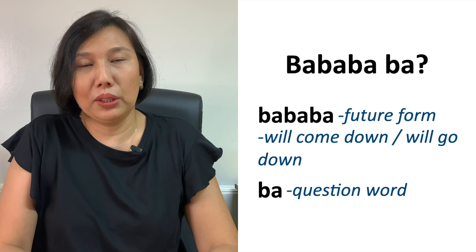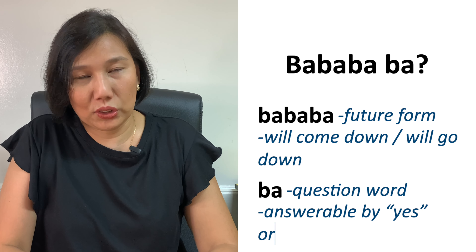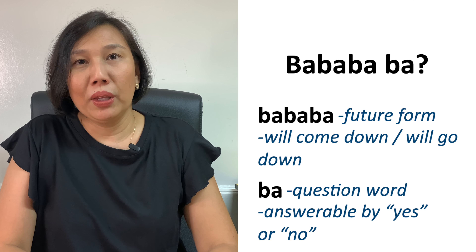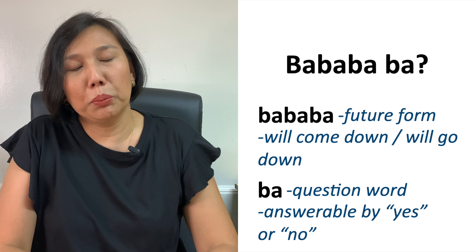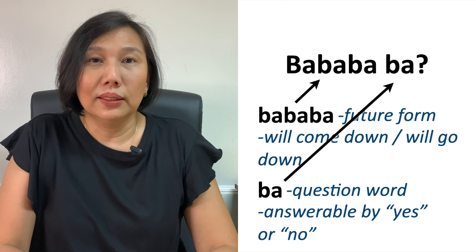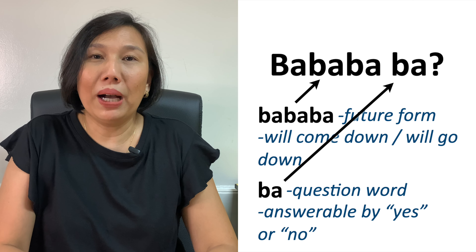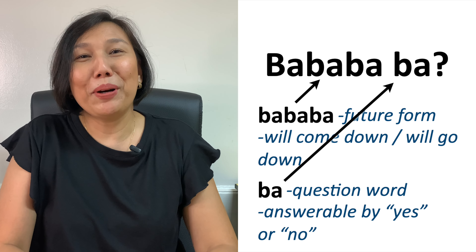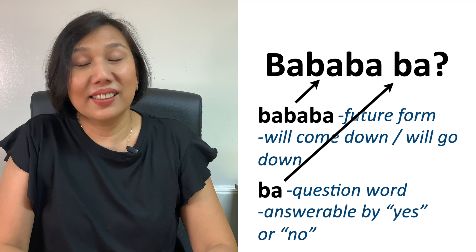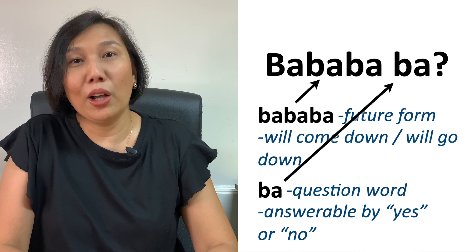Ba is a question particle — only one syllable — used to ask a question answerable by yes or no. Putting together the future form of baba, which is bababa, and the question particle ba to ask if something is going down, it becomes babababa. So babababa came from one single syllable, ba, repeated four times, and it becomes a question.